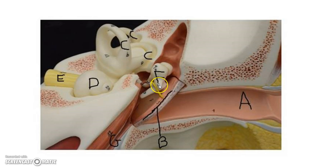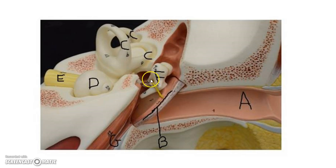One thing you need to know is the difference between conduction and sensorineural deafness. Conduction deafness is when the tympanic membrane and the auditory ossicles do not amplify or focus as well. That's because there are joints between the auditory ossicles, and just like any other joint in your body, as they get older they become stiffer. This can be overcome by the use of a hearing aid, which will help amplify those sound waves.